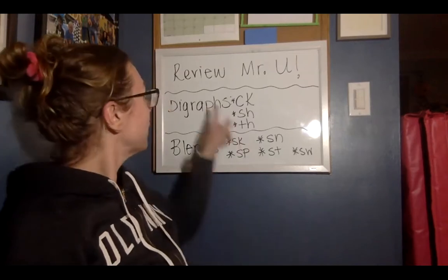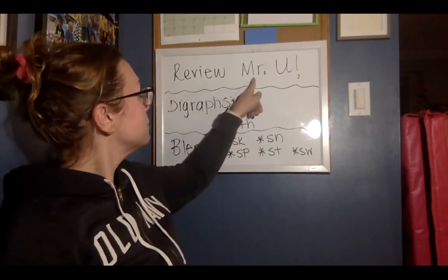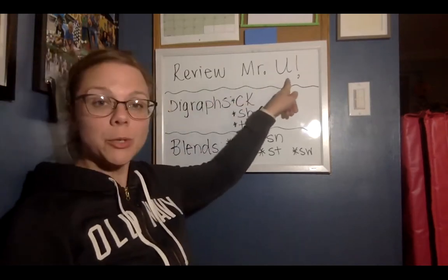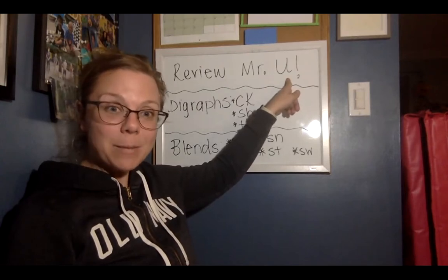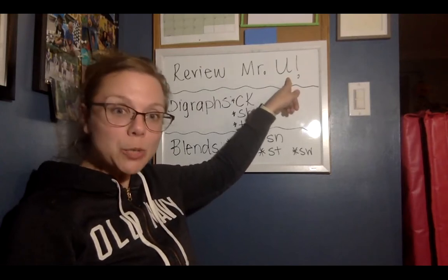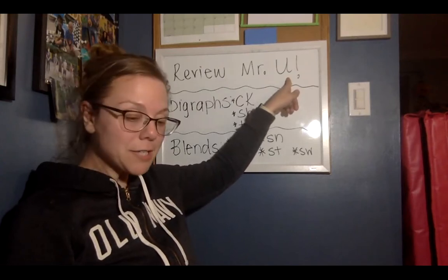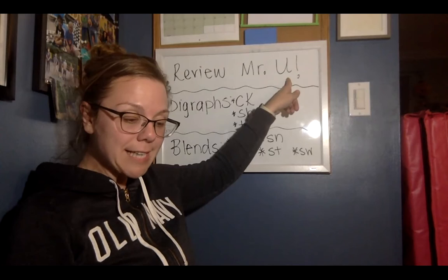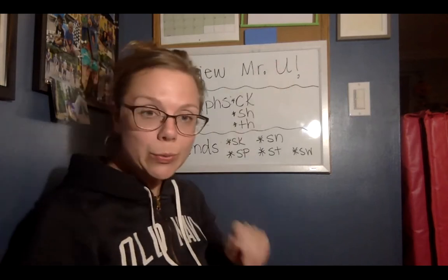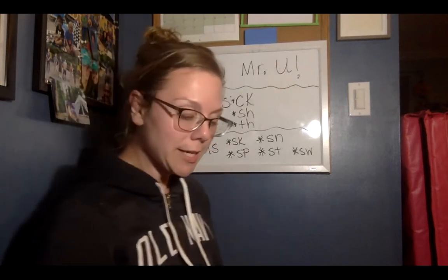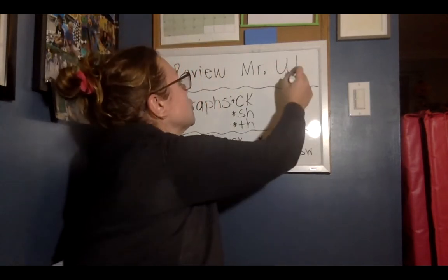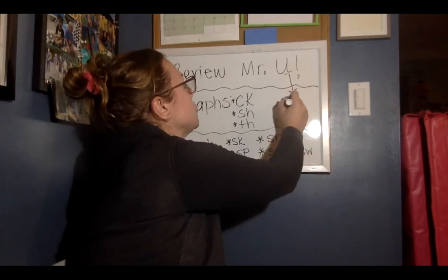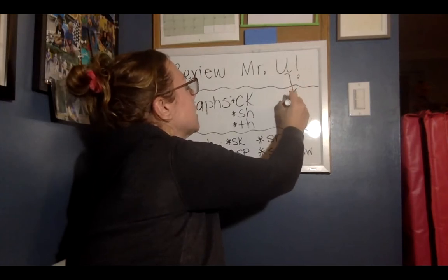The first thing we're going to go over is Mr. U. Sometimes Mr. U says his name, U, and other times he says OO. So let's look at an example of that. Let's look at two words that Mr. U could say.